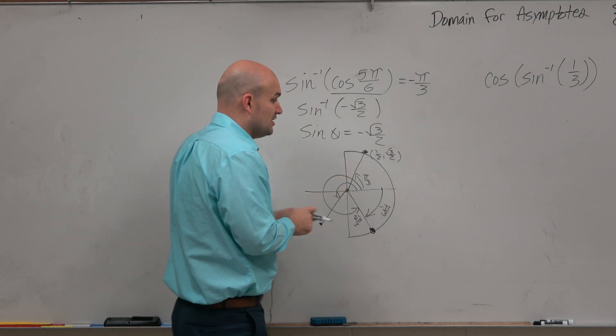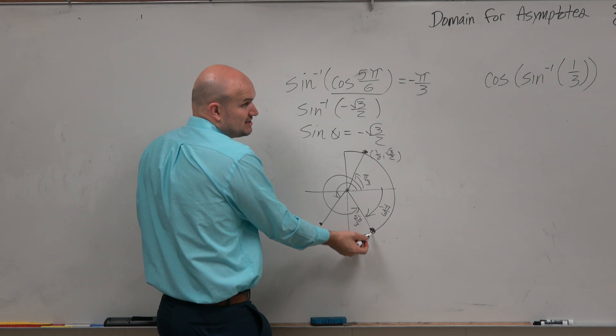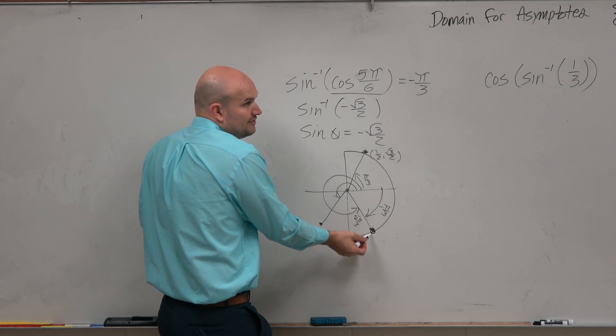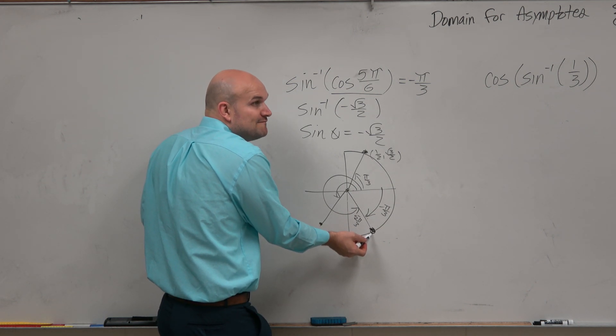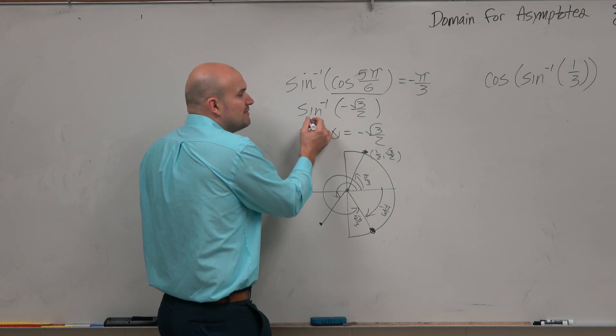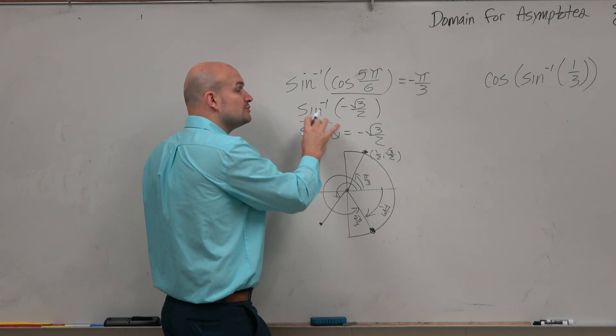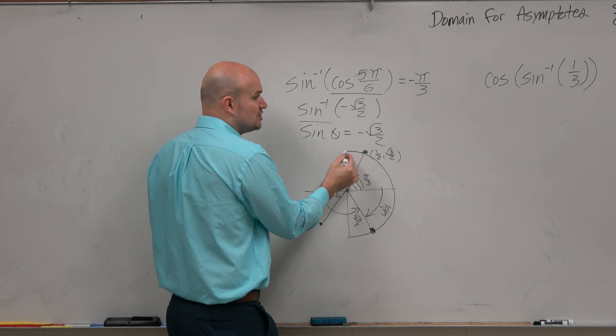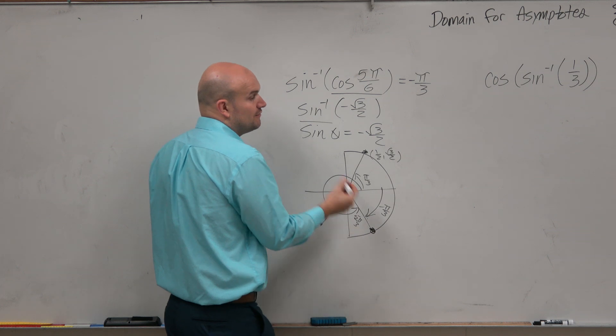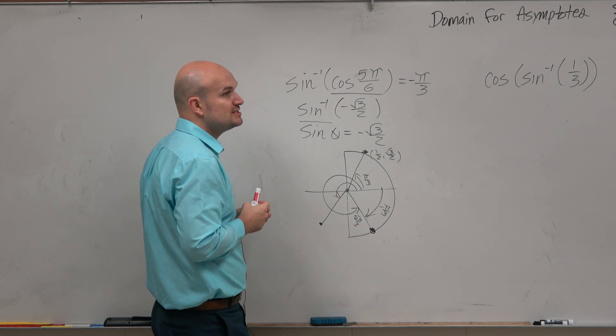But when we work in the reverse, if I say, oh, here's the point, what is the angle? There's infinite many, right? That's why that's not a function, inverse function. That's why we have this restriction where we say, all right, since there's infinite many, we are going to restrict the angles to only give me angles within the first and the fourth quadrants. That's why the restrictions exist.